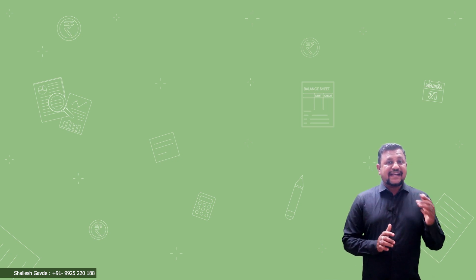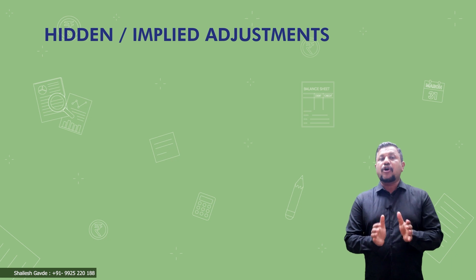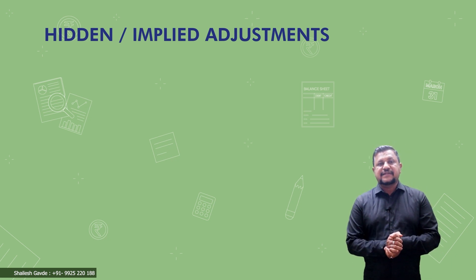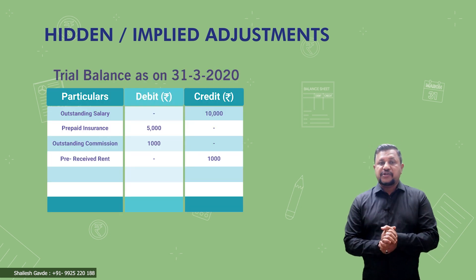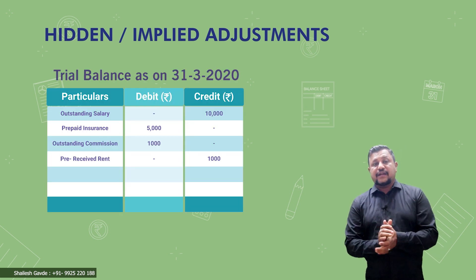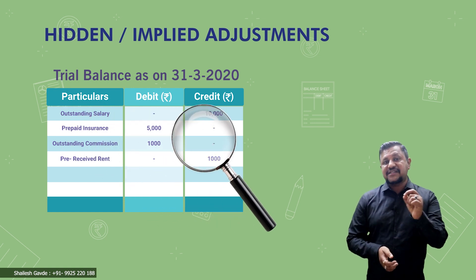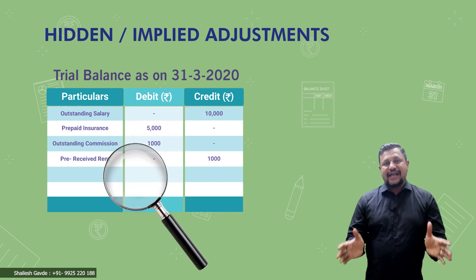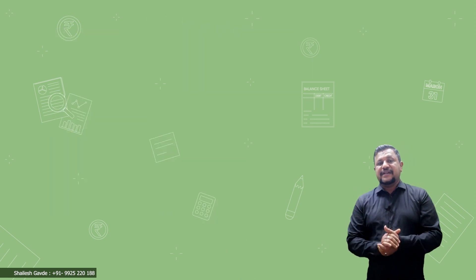Now we'll come to the next group of adjustments which are termed as hidden adjustments or implied adjustments. These adjustments are not directly given below the trial balance; instead we have to find out these adjustments by the hints which are given to us in the trial balance. We'll take the first adjustment and look at one trial balance.